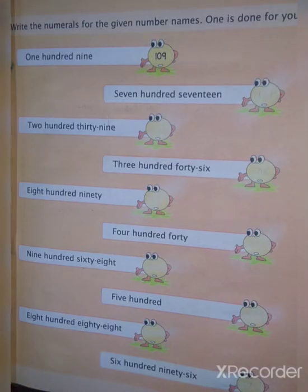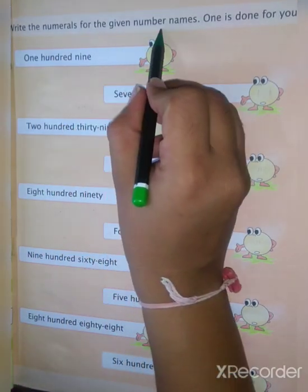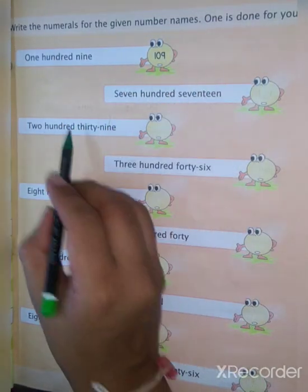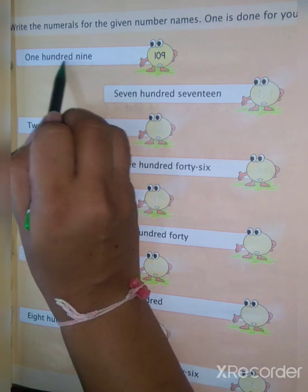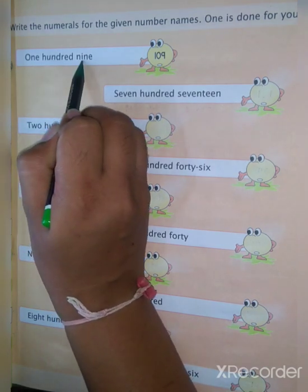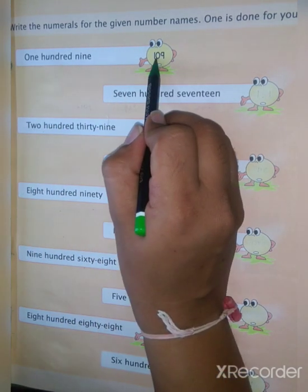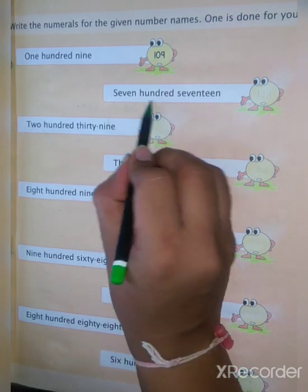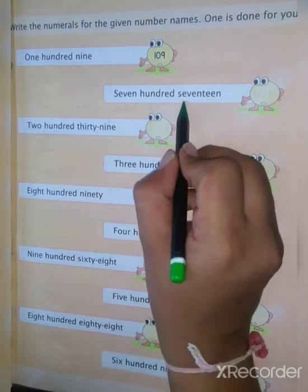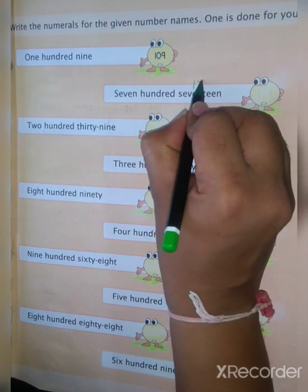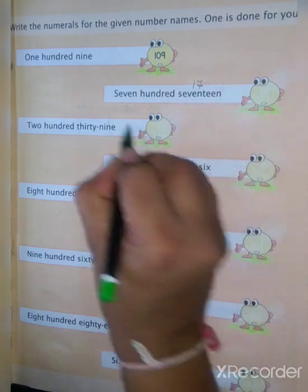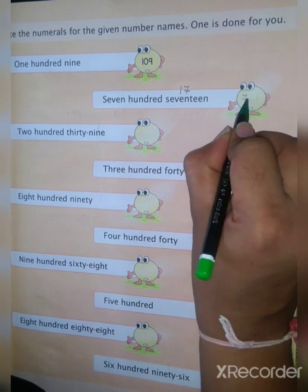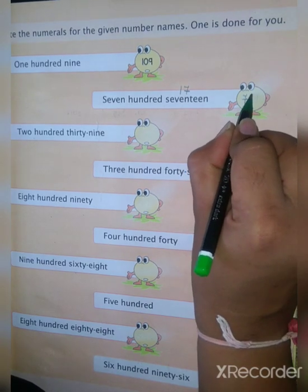Now write the numerals for the given number name — one is done for you. Here what is the number name? 109. So your answer is 109. Same, it is 717: 17 means 1, 7 and in the hundreds position 7 is there. So write here 717.